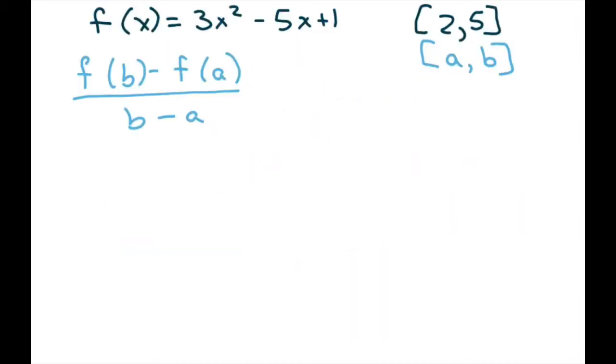So basically we'll just get started and we have this function. So we have our a and b, so let's just plug it in. So we have f(5) - f(2) divided by 5 - 2.